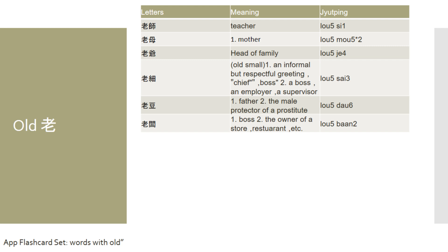If you are working under someone, the head of the male family — for example, your grandfather-in-law or a senior male figure — in Cantonese you would address them as 老爺 (lou ye). A more informal term for boss in Cantonese is 老細 (lou sai).